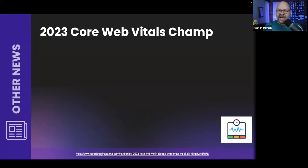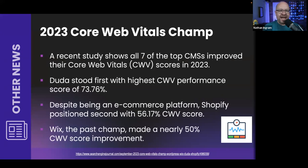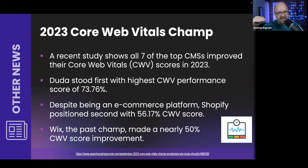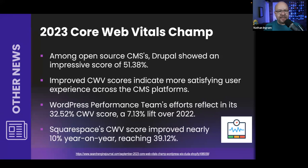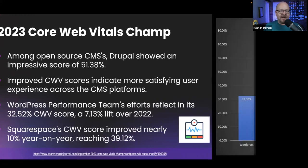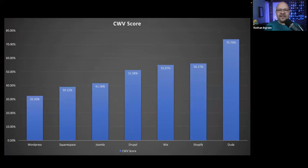A survey of the top seven CMS platforms on the web compared their Core Web Vitals scores. Duda had the highest performance score at 73, Shopify came second, Wix made a 50-point improvement, and Drupal also improved significantly. WordPress increased 7%, up to 32% — unfortunately the slowest of the bunch. The WordPress core performance team continues to make changes to hopefully improve that number.